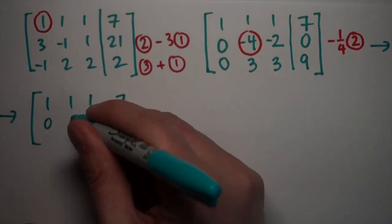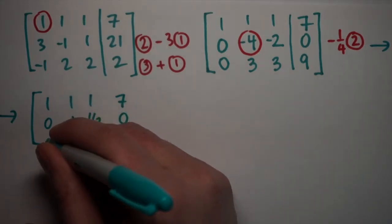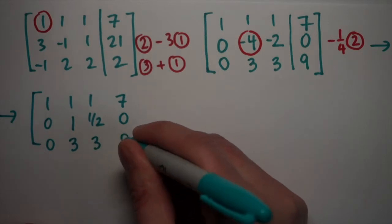So my first row is still one, one, one, seven. My second row becomes zero, one, one half. Negative two over negative four is positive one half. And then zero, three, three, nine.